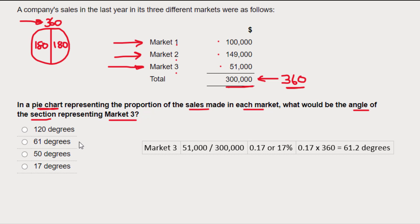That gives us the second option — 61 degrees. Now I could just go with that answer straight away, but what I quite like to do is double-check that my answer is correct. I can do that by working out the degrees for market one and market two as well. Adding those to 61.2 degrees should come back to the total of 360, giving me confirmation that I've got this right.